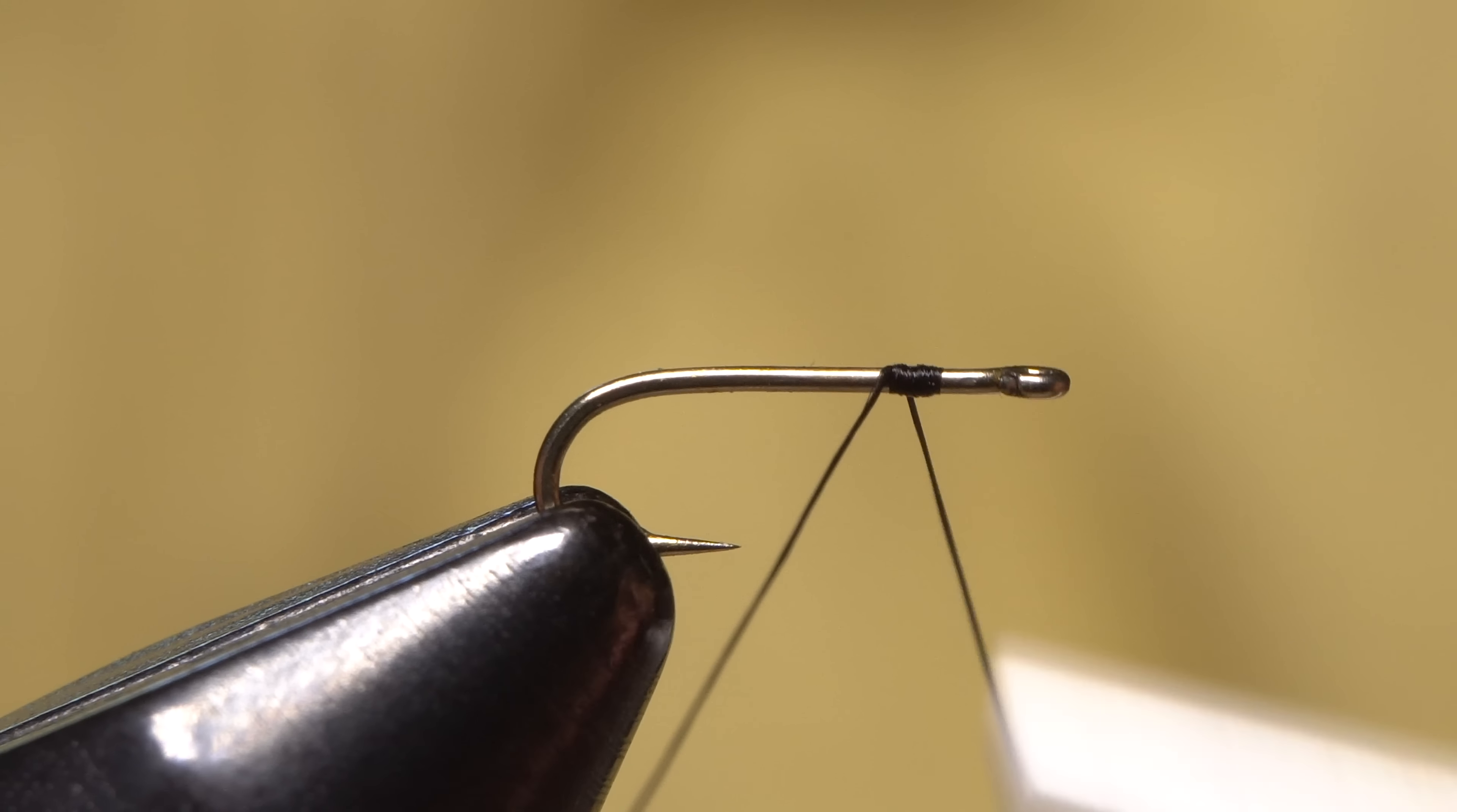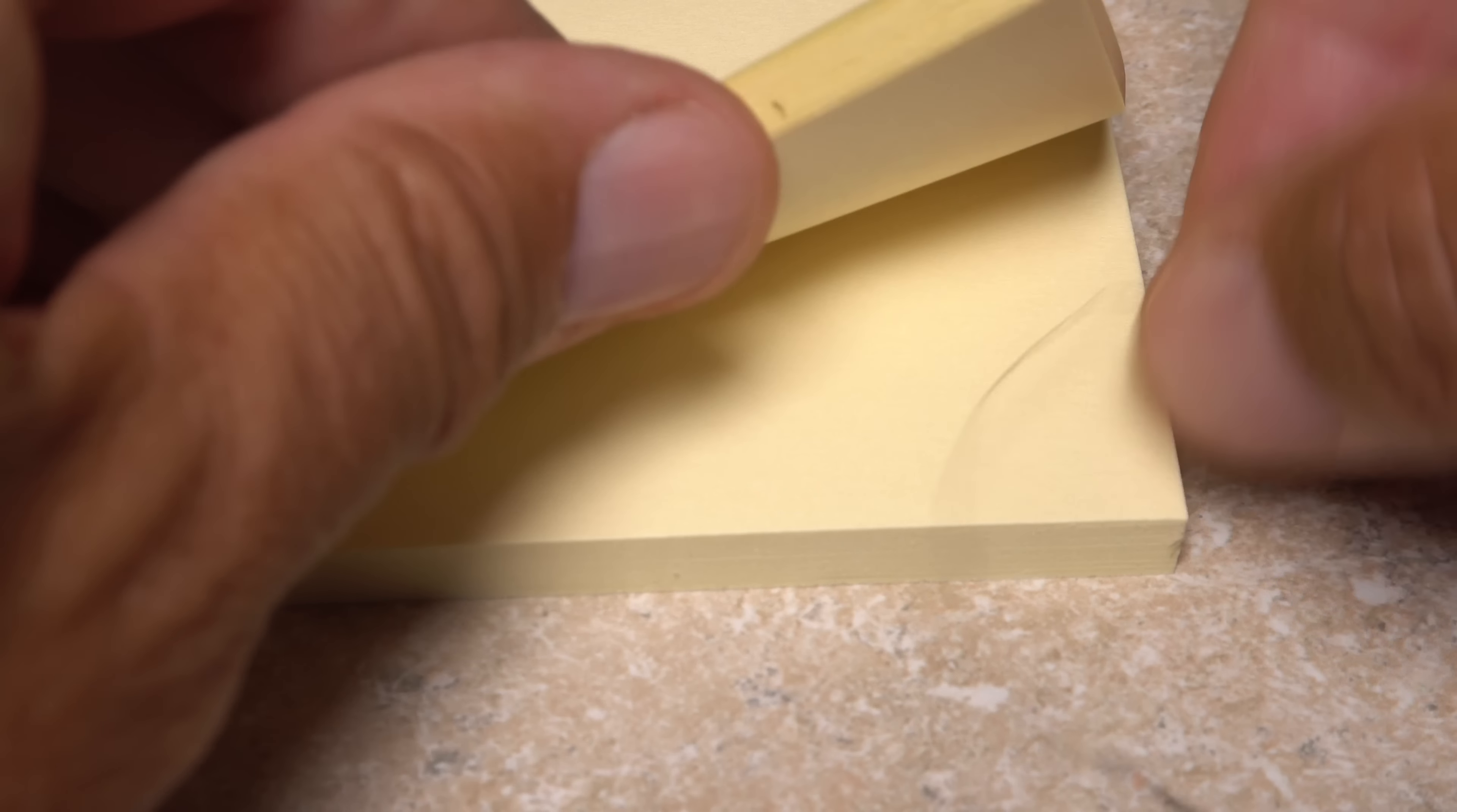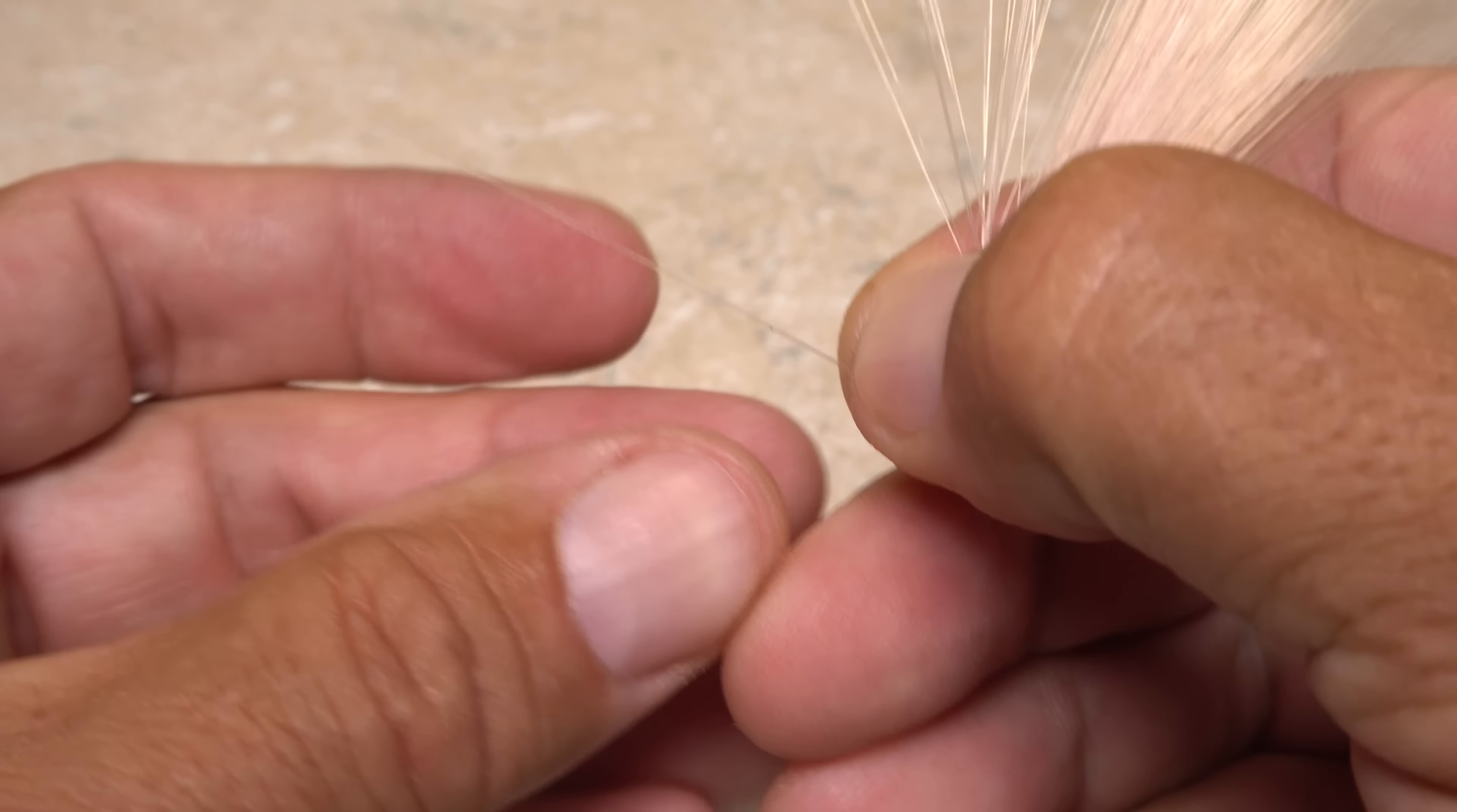Thin, strong thread works well with this pattern. Leaving a long tag, get your thread started on the hook shank in eye-length space behind the eye and take a few wraps rearward before snipping off the oversized tag. Store the tag in a safe place on your tying bench for later use.